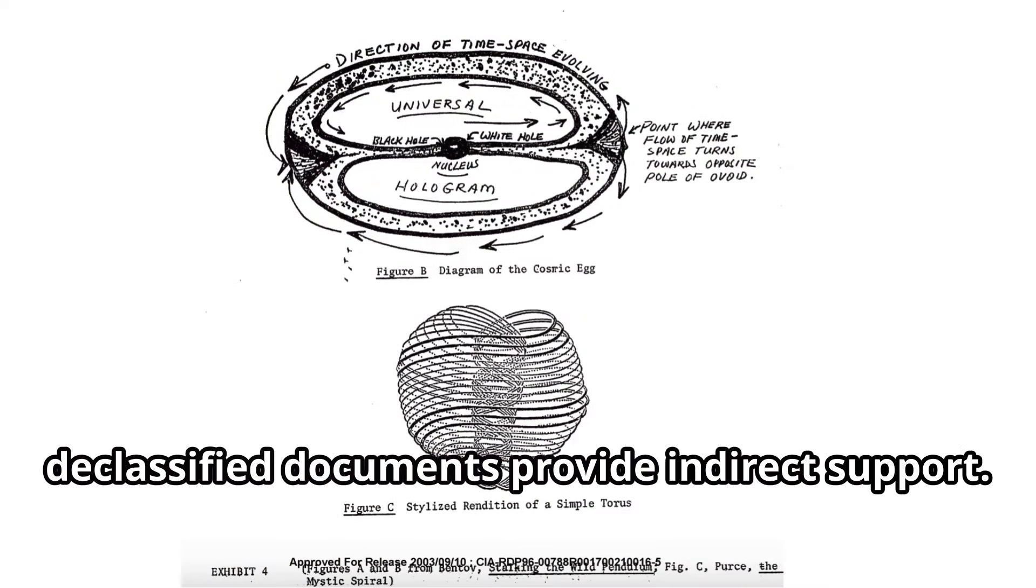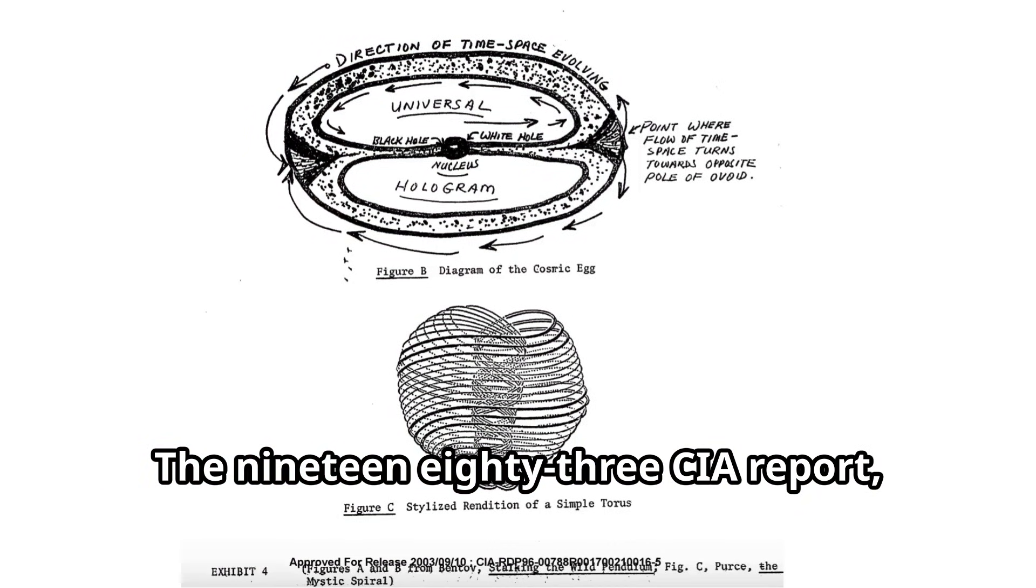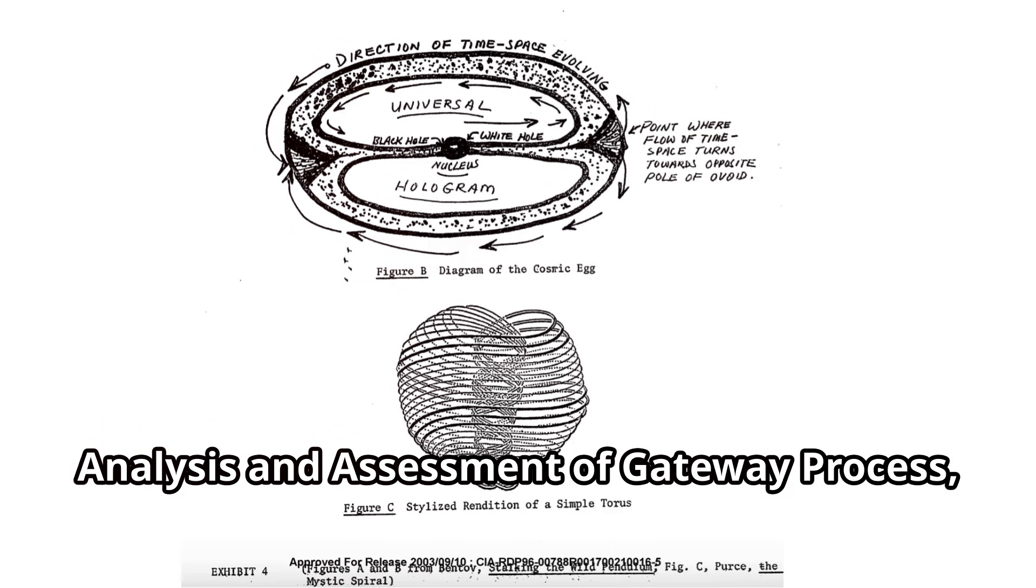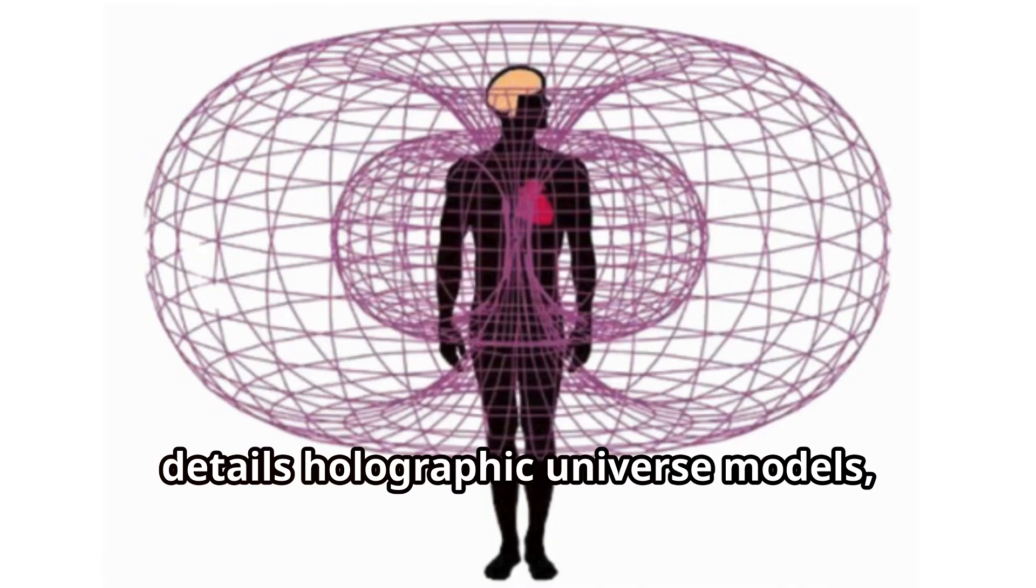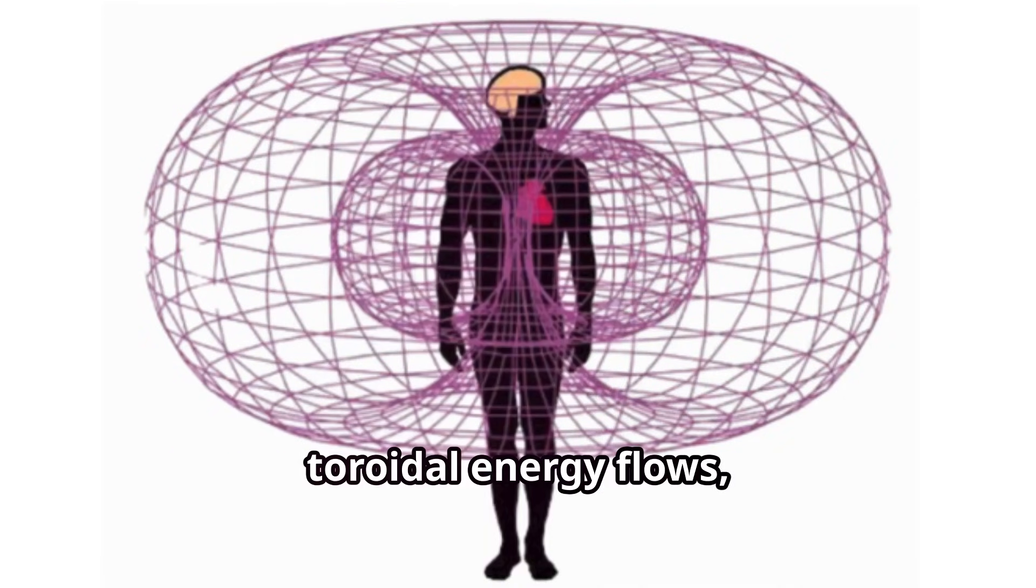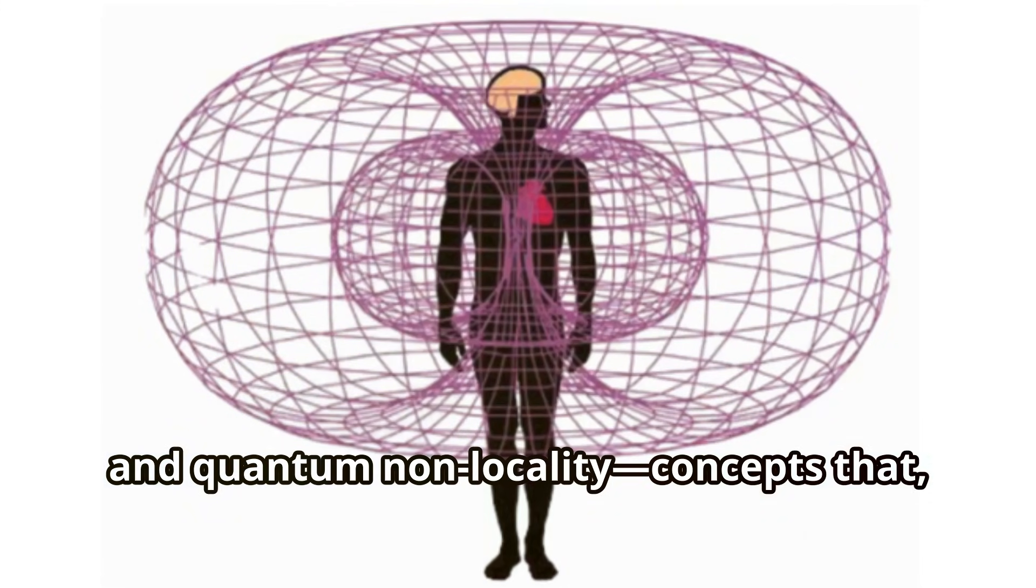So, declassified documents provide indirect support. The 1983 CIA report, Analysis and Assessment of Gateway Process, details holographic universe models, toroidal energy flows, and quantum non-locality.